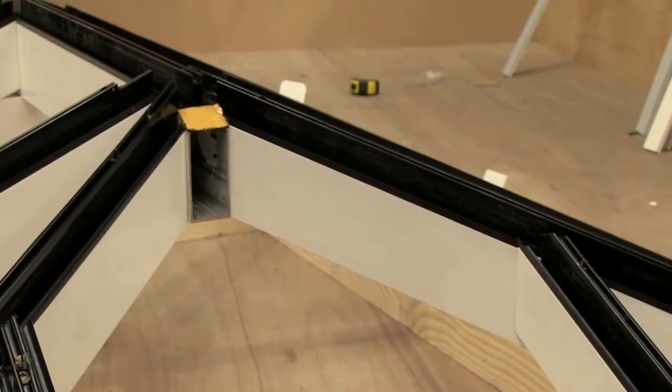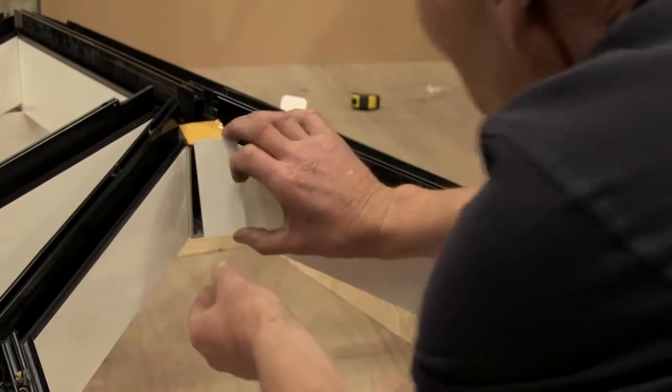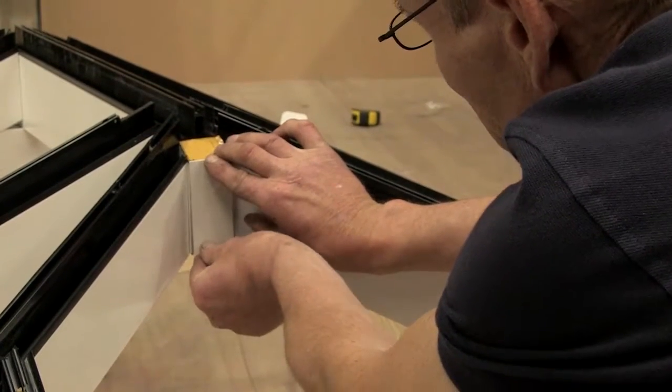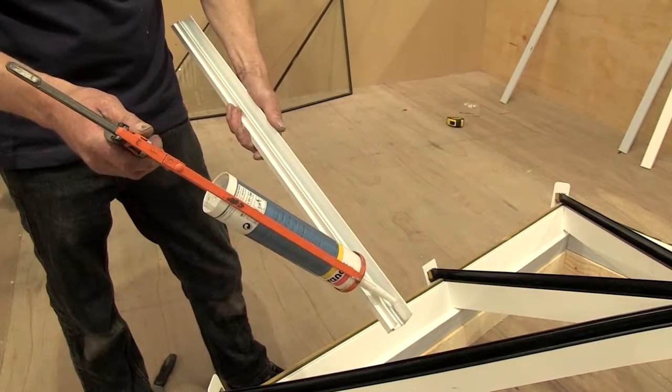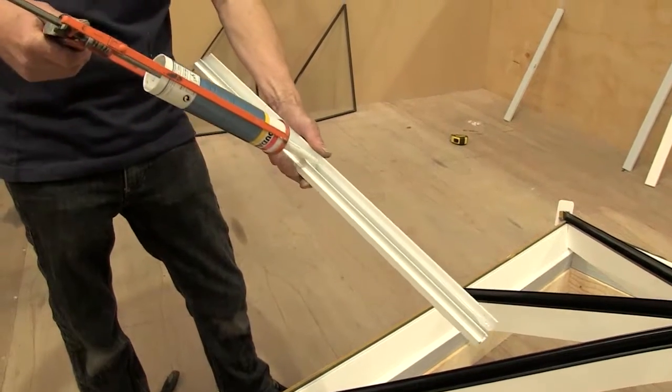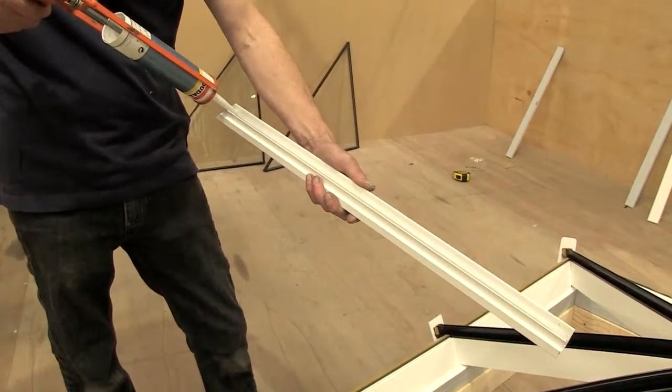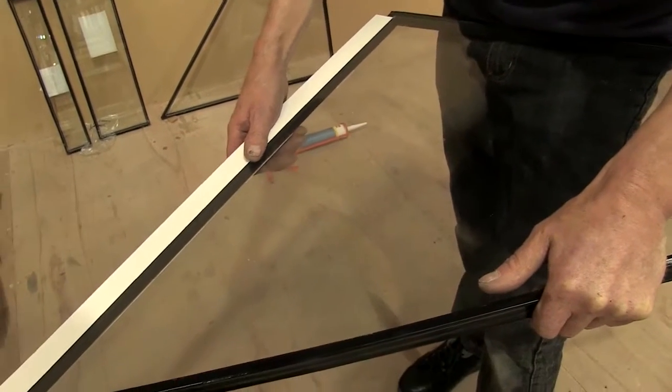When there is no bell rafter, glue internal ridge end caps onto each end of the ridge. Run a bead of sealant along the top leg of the glazing enclosure. Slide glazing enclosure over the bottom of the glazing.